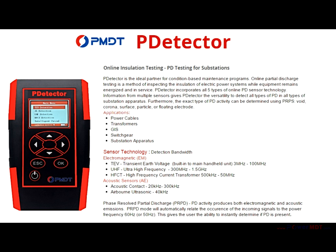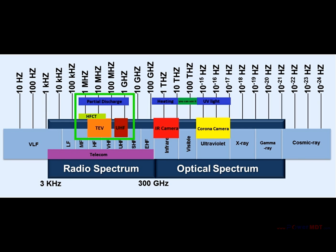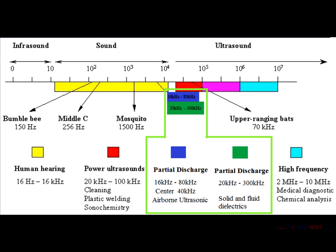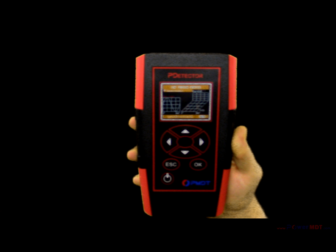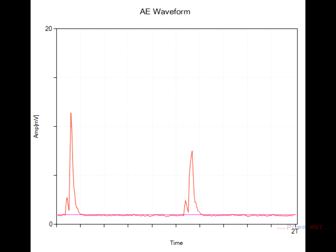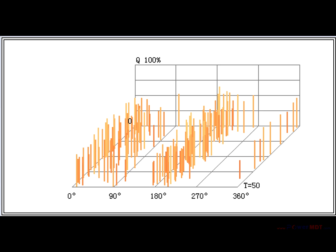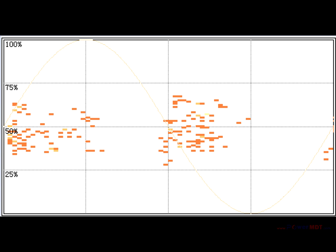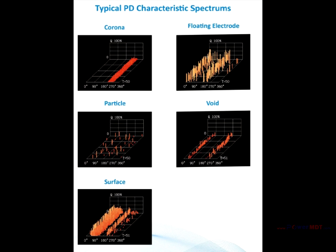PMDT's flagship product, the PDtector, is the perfect solution for online PD testing in substations. It uniquely includes all three types of radiofrequency sensors and both types of ultrasonic sensors. It also has the diagnostic power of phase-resolved measurements, which compare the timing of incoming pulses to the AC power frequency, instantly eliminating background noise that is not synchronous to the 60 Hz AC sine wave.